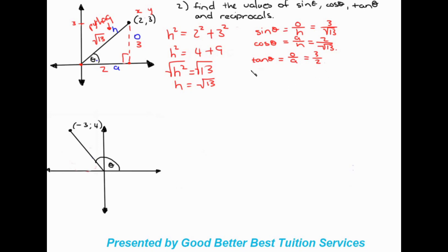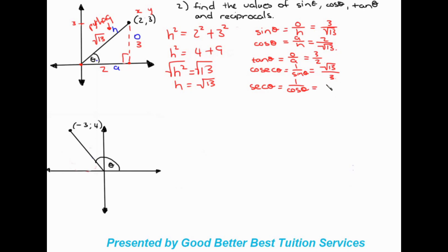Now the reciprocals. We have cosec theta first, which is one over sine theta — basically the inverse, so that's square root of thirteen over three. Then sec theta, which is one over cos theta — the inverse gives us square root of thirteen over two. And cot theta is one over tan theta, which is the inverse of three over two, giving us two over three. You don't always have to refer back to the triangle — if you already have the answer, just switch the numerator and denominator to get the reciprocal.